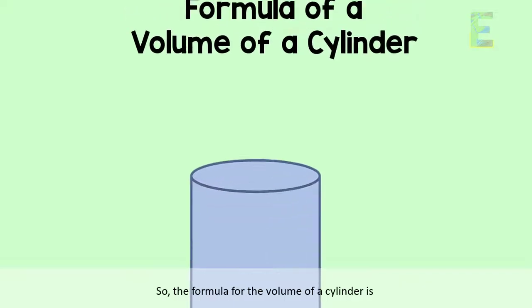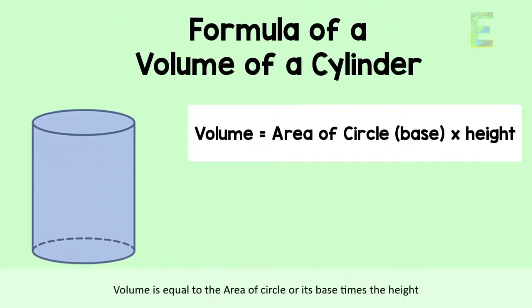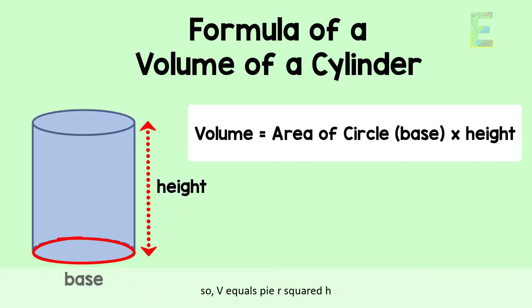The formula for the volume of a cylinder is volume equals the area of circle or its base times the height, so V equals pi r squared h.